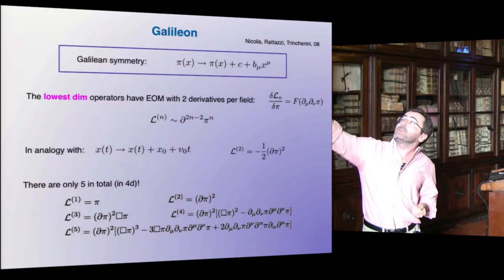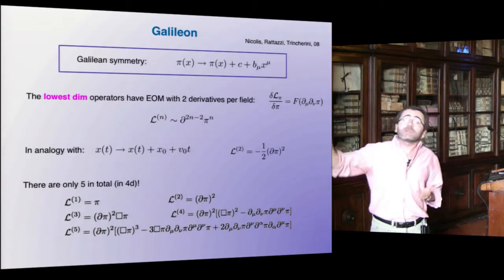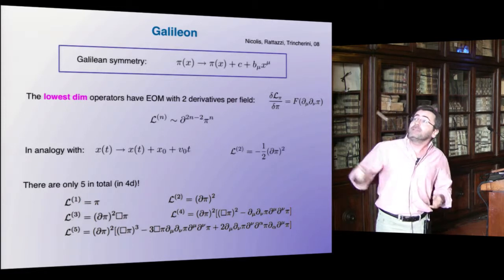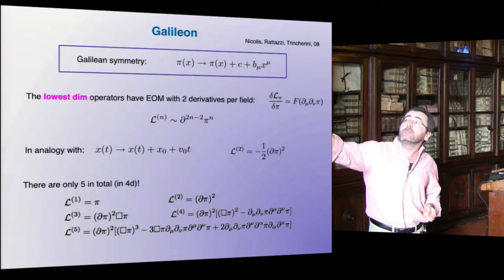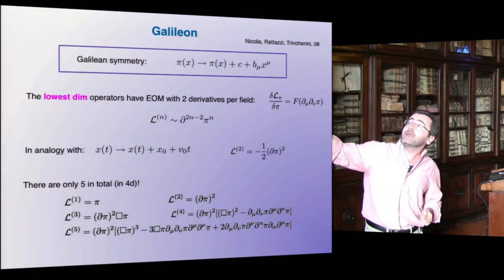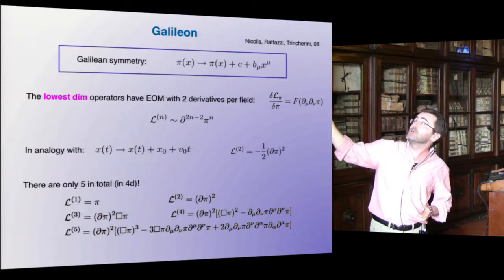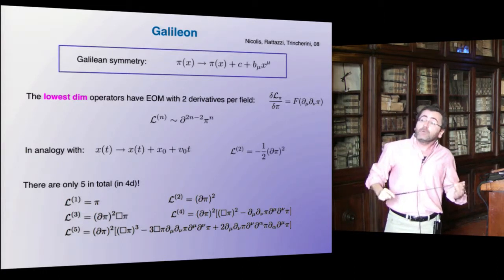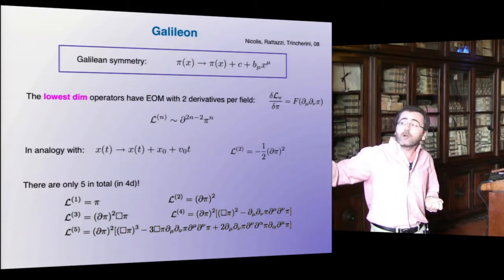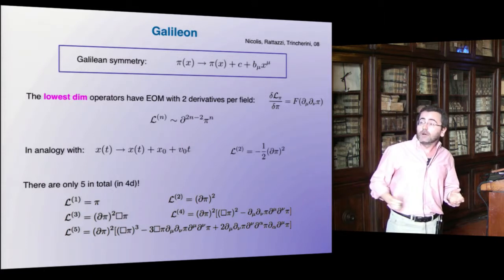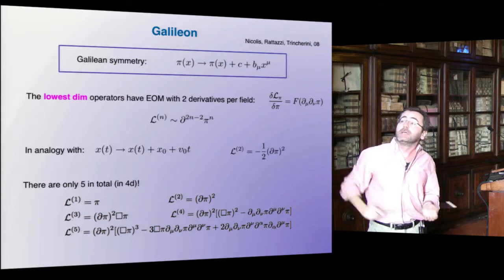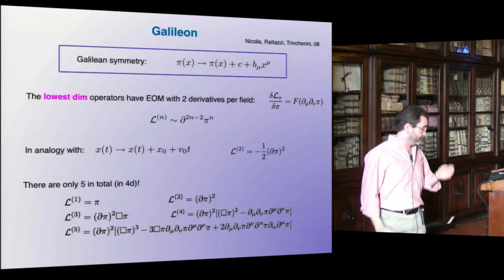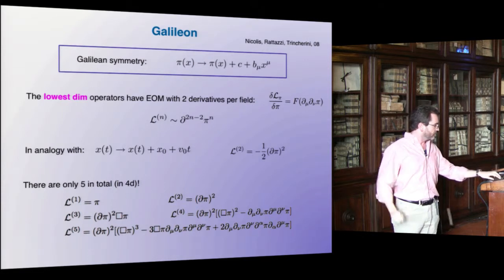What are the lowest-dimensional operators compatible with this symmetry? You expect that in the equation of motion you have two derivatives, because you want a shift under one derivative. At the Lagrangian level, the lowest-dimensional operators, once we take the equation of motion, give equations of motion which are functions of two derivatives. Of course you can always add more derivatives, but these are the lowest-dimensional operators. There are only five such operators in four dimensions. The first one is the kinetic term; there are more complicated ones, including one related to the DGP model, and five in total.